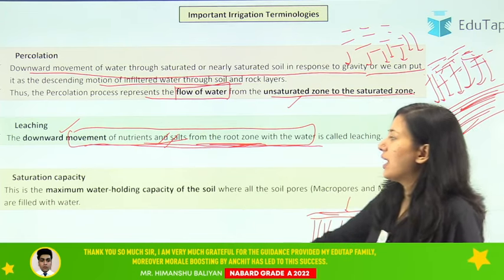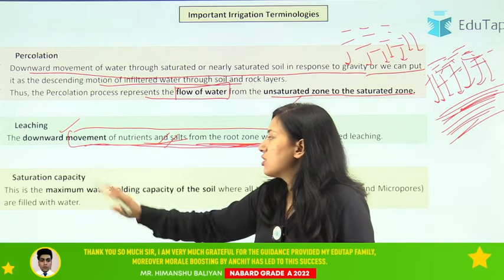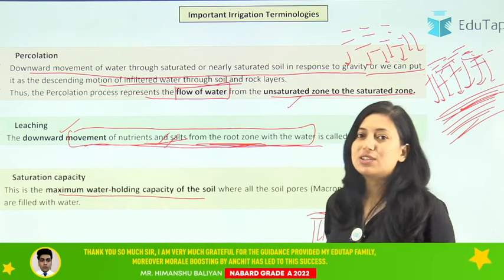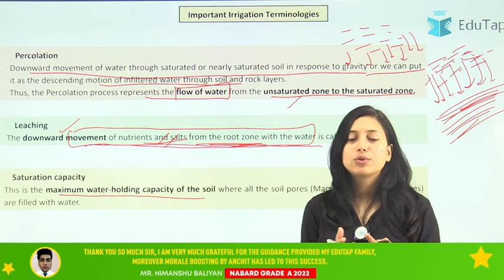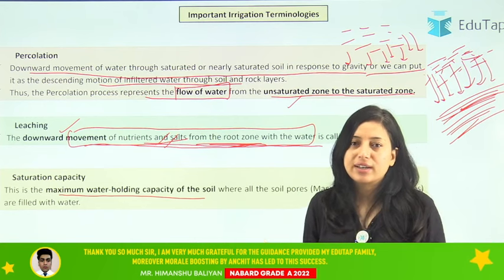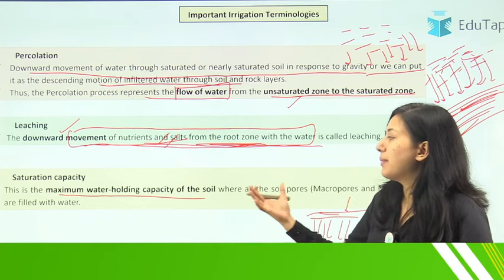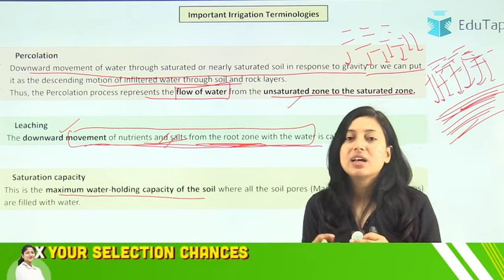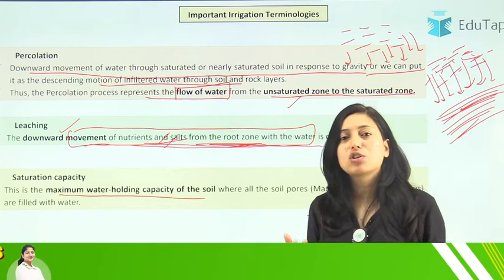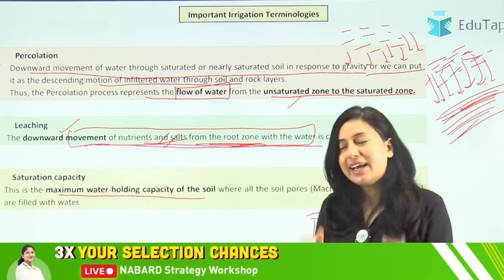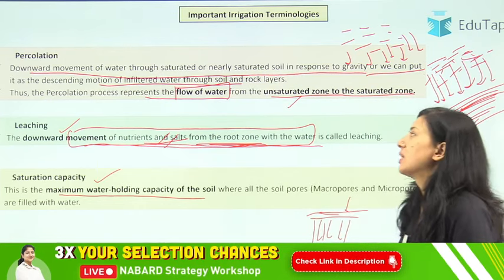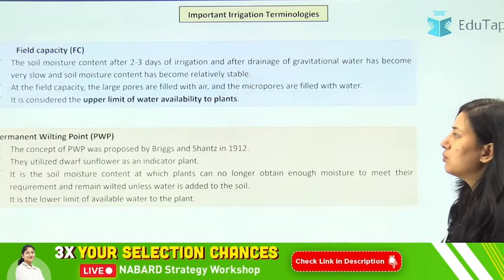Next is saturation capacity — it is the maximum water holding capacity of the soil. As I have explained, when all your macro pores and micro pores are filled with water, that is the maximum water holding capacity of soil, and that is called saturation capacity.